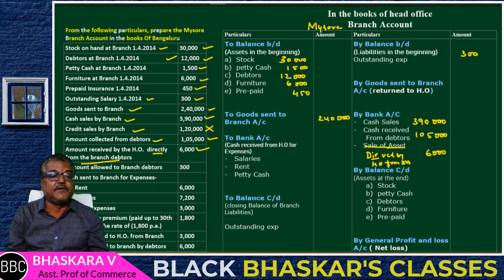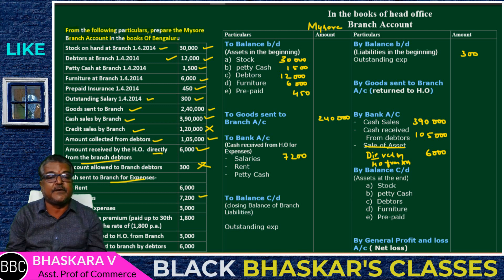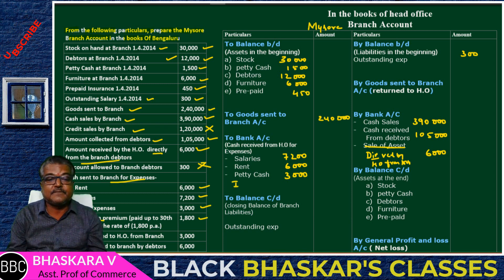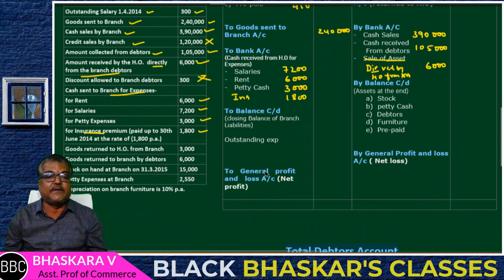Next, discount allowed — this is the branch account. Cash sent to branch for expenses: salary 7,200; rent 6,000; petty expenses 3,000; insurance 1,800. These are all branch account expenses.